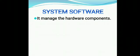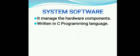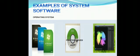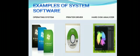System software manages the hardware components — such as CPU, monitor, keyboard, and mouse. System software is written in the C programming language. Examples of system software are: operating system, printer driver, and hard disk analyzer.